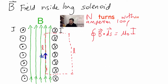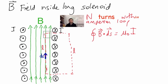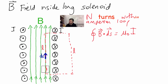Let's evaluate B · dS around the loop. On the left side inside the coil, B is parallel to dS, so the dot product gives cosine(0) = 1. On the short perpendicular sections, dS is completely perpendicular to B, so we get nothing there. Outside the solenoid the magnetic field is zero, so there's nothing there either. The only part of this integral that actually contributes is the section inside the coil along the left side.